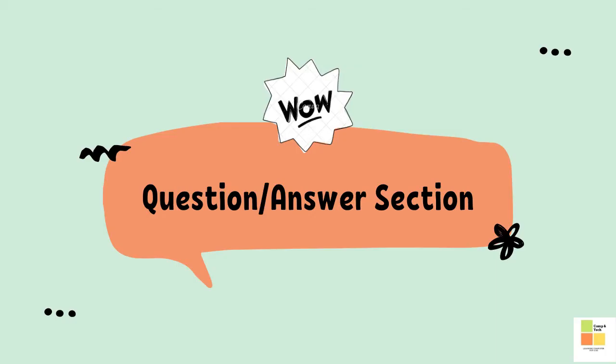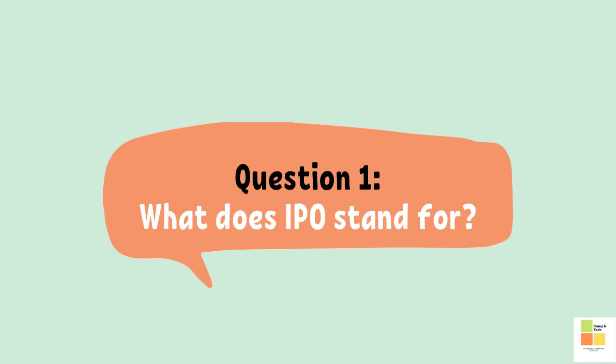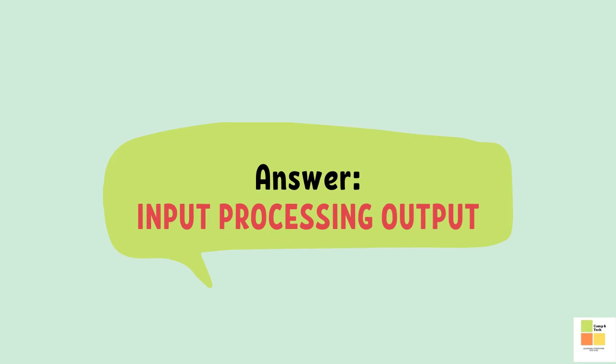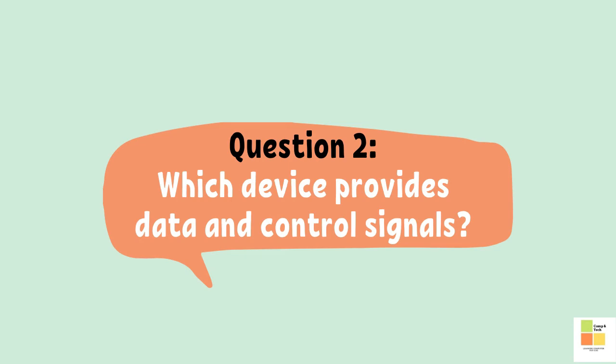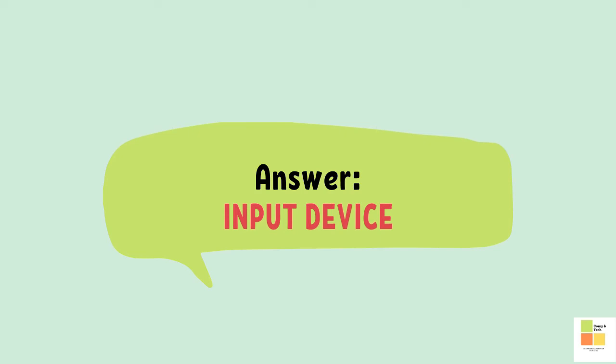Question and answer section. Question number one: what does IPO stand for? Answer: input, processing, output. Question number two: which device provides data and control signals? Answer: input device.